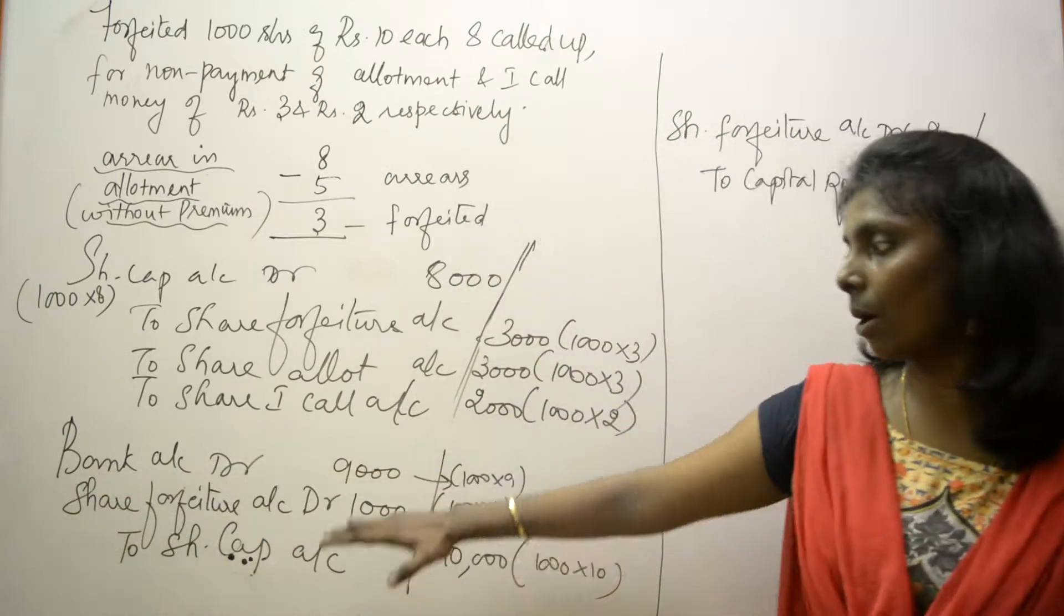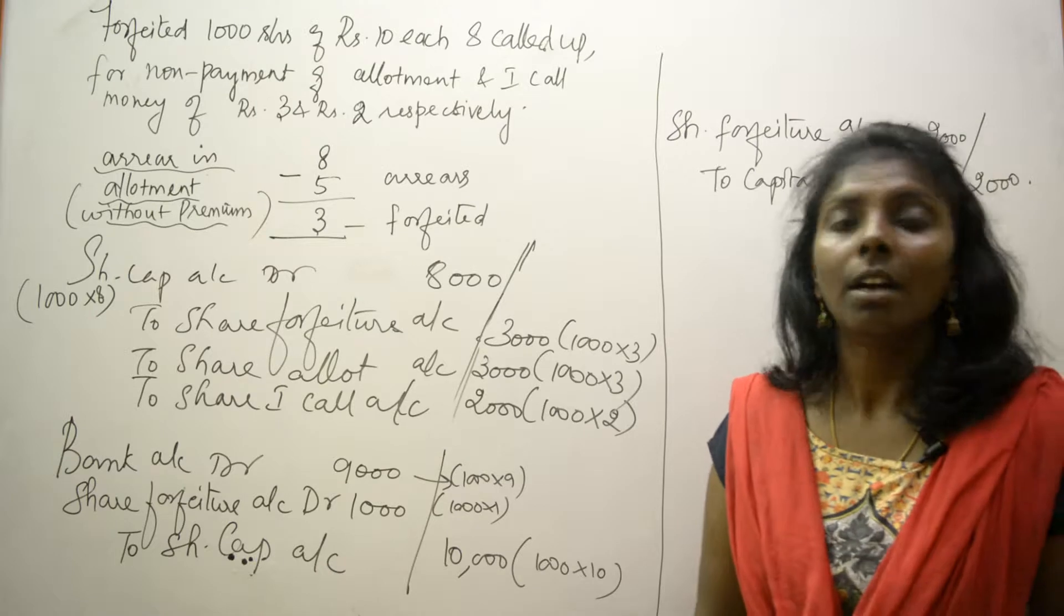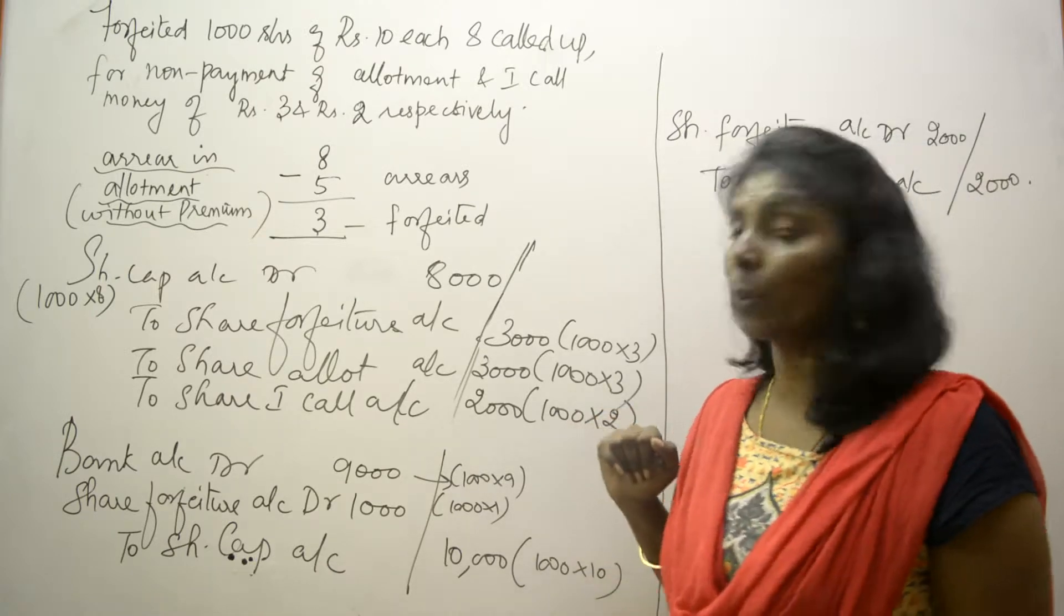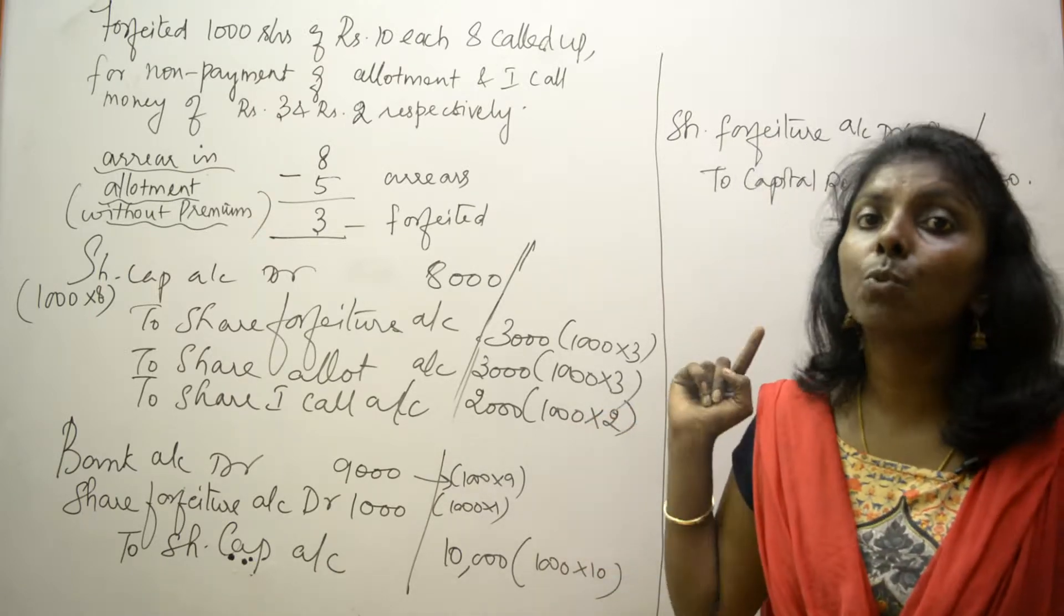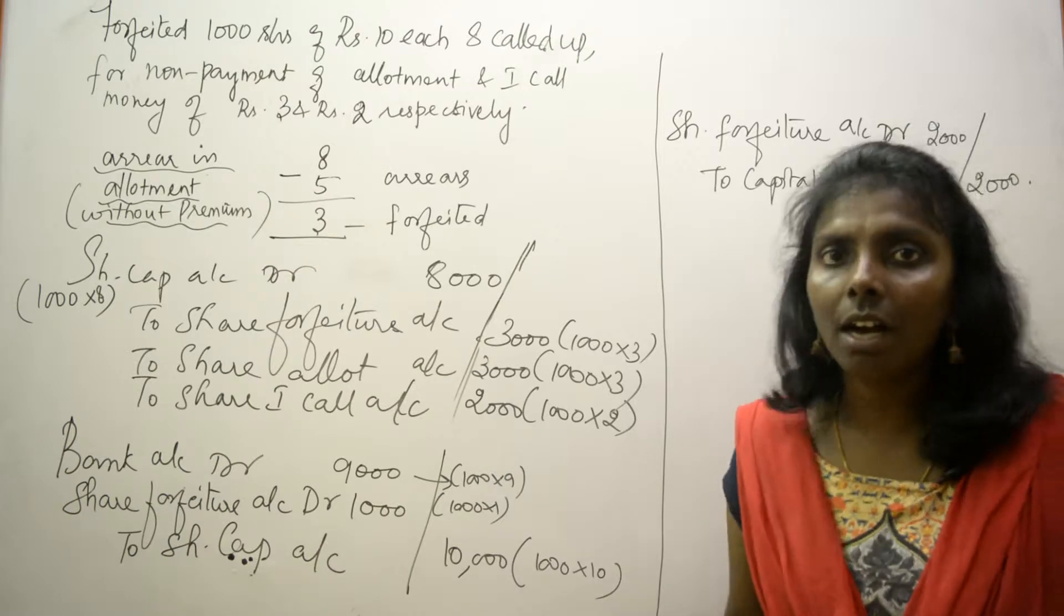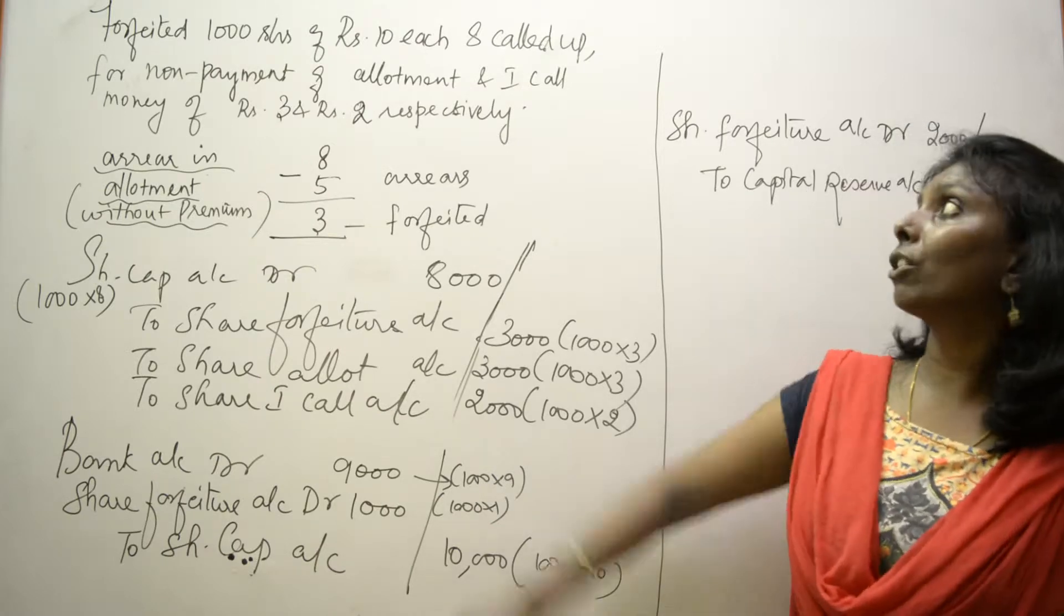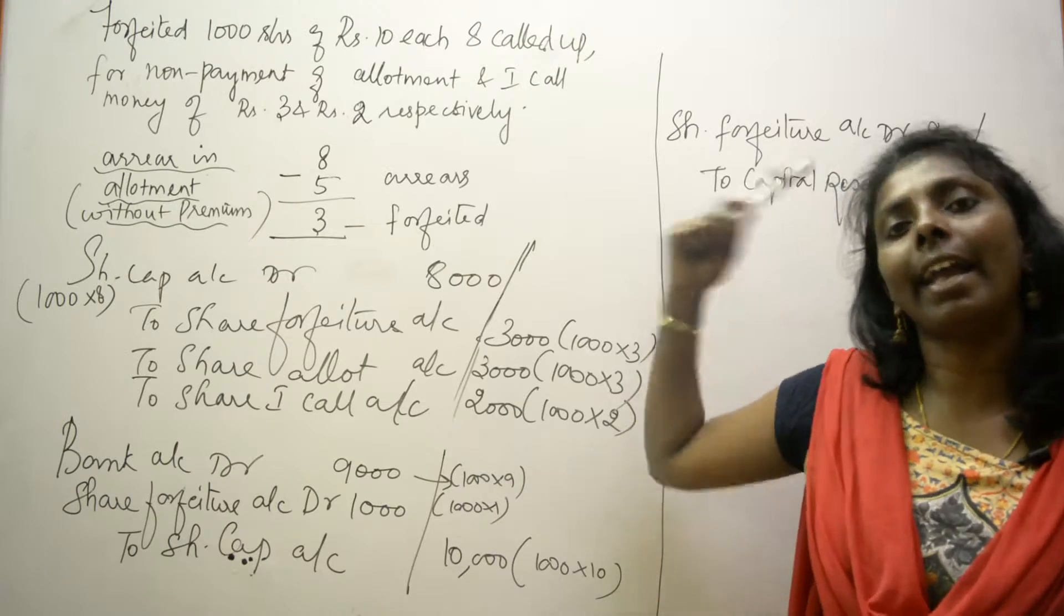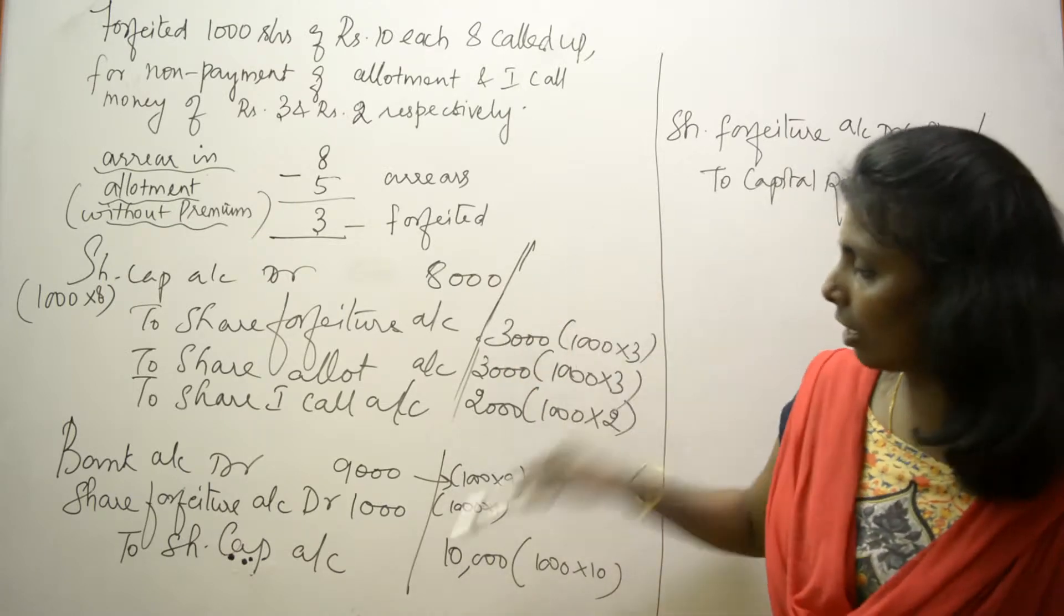So it's bank account debit, 1000 into 9, 9000, because I'm reissuing for 9. There is 1 rupee discount. Now here students get confused because it's only 8 called up. They might think 8 rupee share is reissued for 9, so it results in a premium.